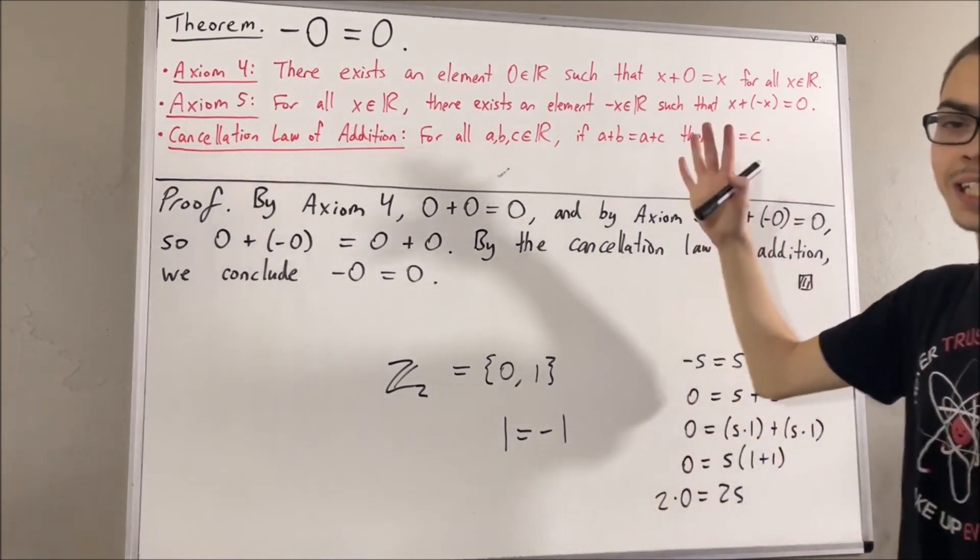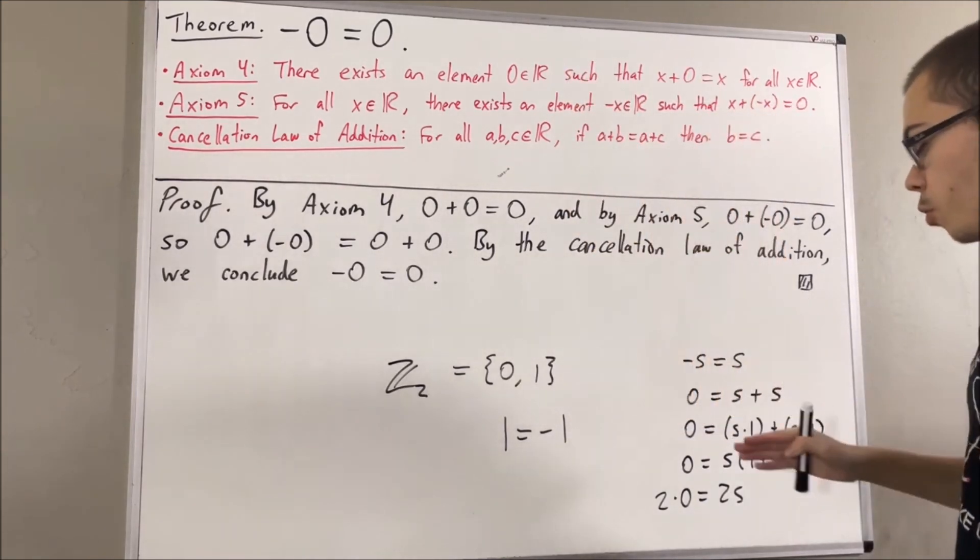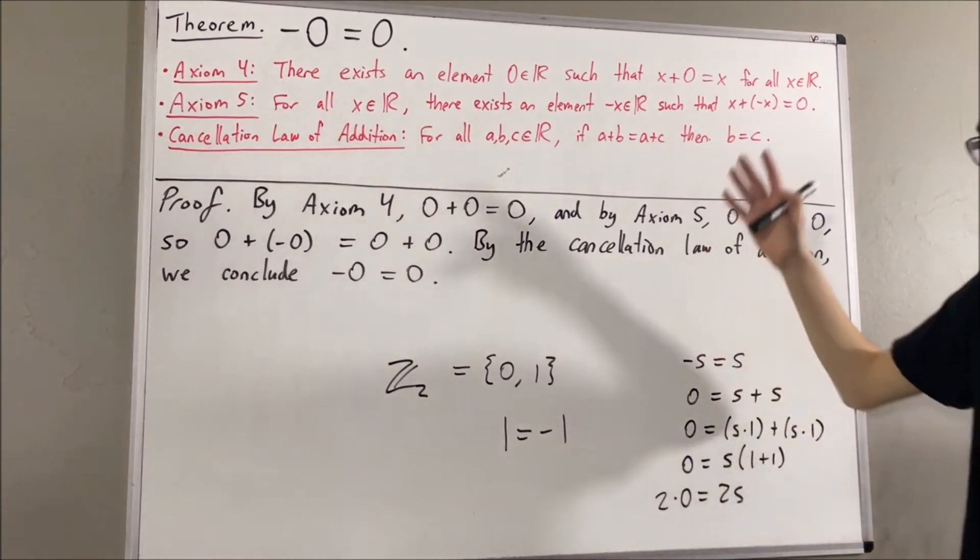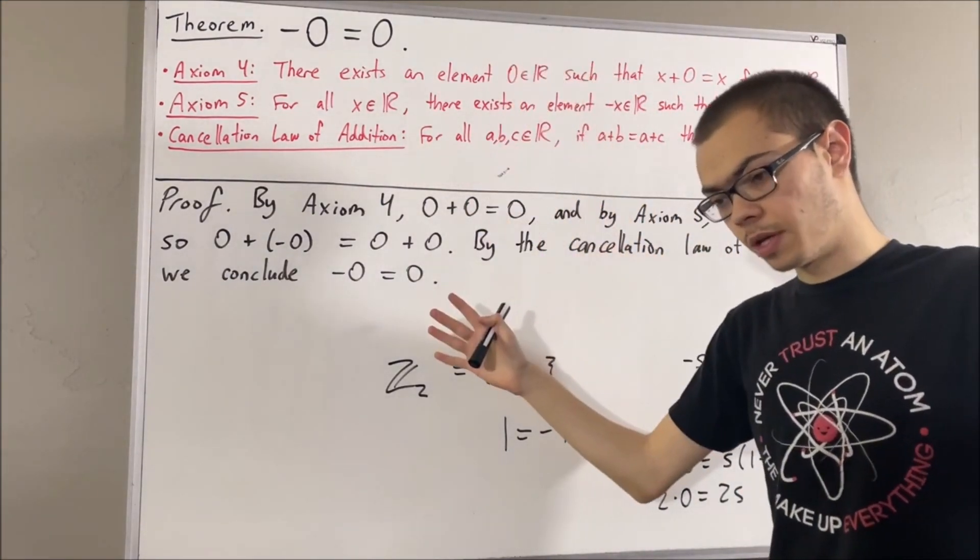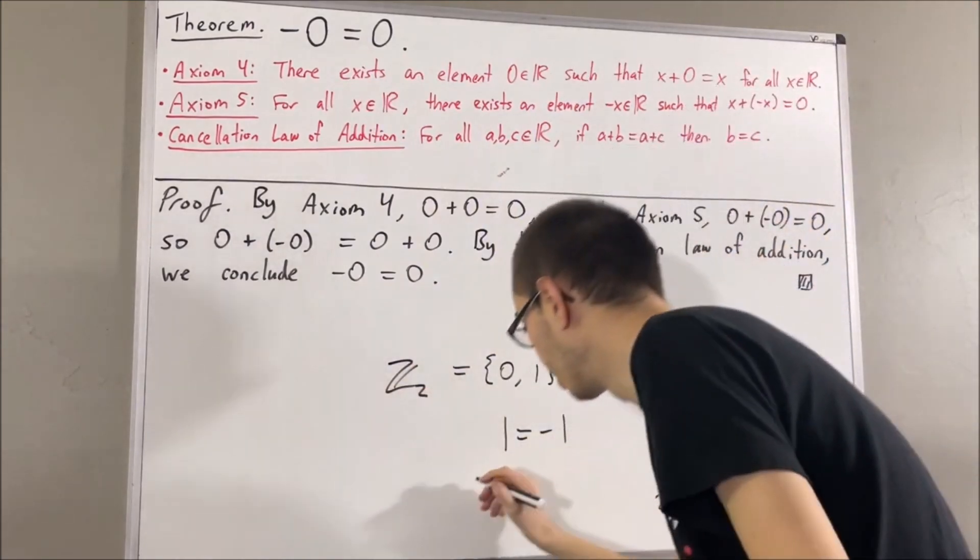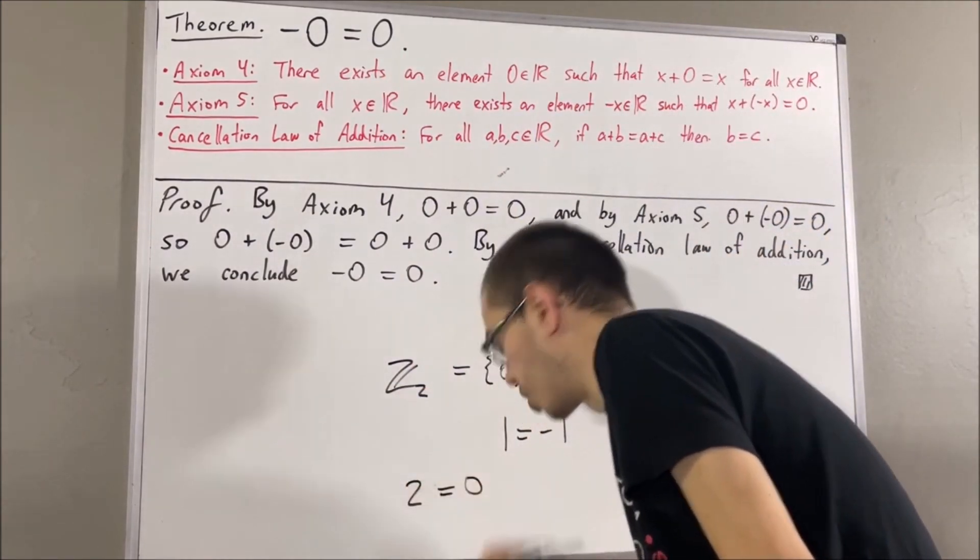Because, in fact, axioms 1 through 7 is not enough to prove 2 is not equal to 0. Because, again, if we're working with only axioms 1 through 7, then the set of real numbers could be Z2 for all we know. But, in Z2, 2 is equal to 0.